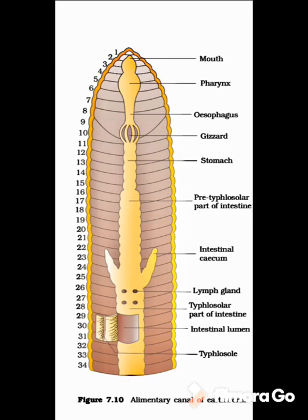The mouth is present on the first segment and leads into a hollow structure called buccal cavity, present from the 1st to 3rd segment. The buccal cavity leads to a tubular structure called the esophagus, which extends from the 5th to 7th segment. The esophagus leads into a thick circular structure called the gizzard, present from the 8th to 9th segment.